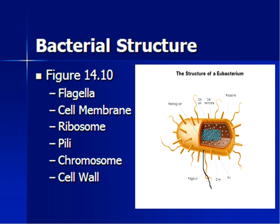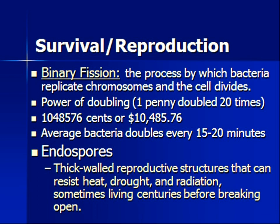Bacteria does not have as many organelles as our eukaryotic cells because bacterial cells are prokaryotic. How they reproduce — definitely need to know that. It's called the process of binary fission. 'Bi' is two, fission means separate. The process by which bacteria replicate chromosomes and then the cell divides. It's a power of doubling — they just keep doubling. That's what bacteria cells do.